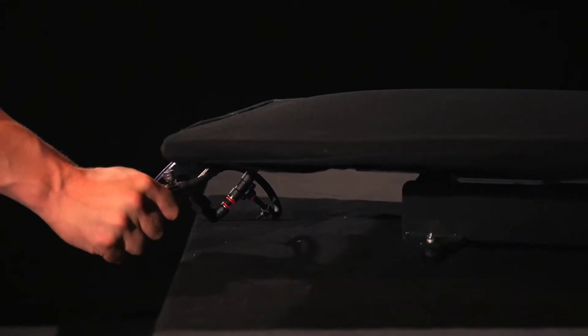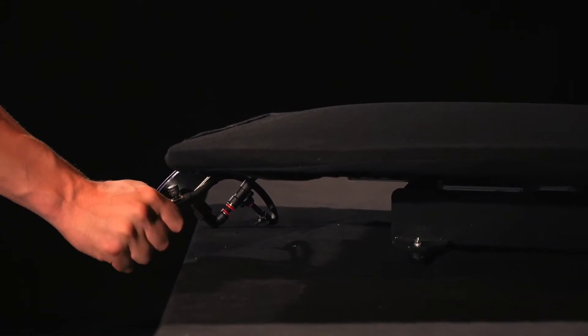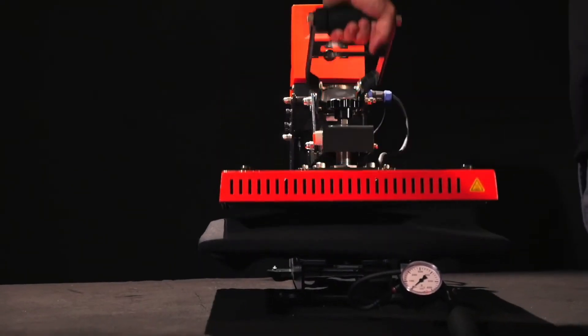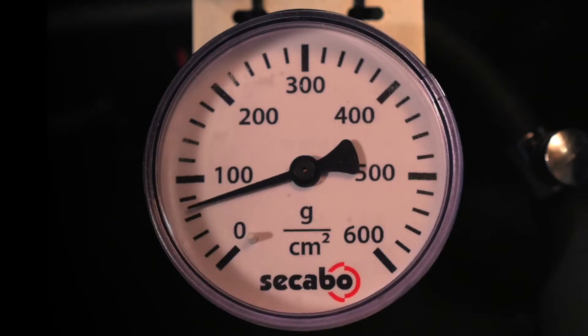When the heat press is closed, a manometer reliably displays the current contact pressure in grams per square centimeter.